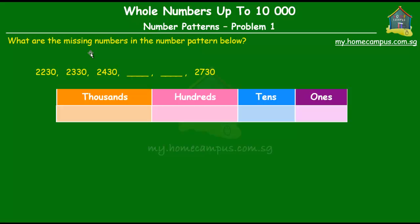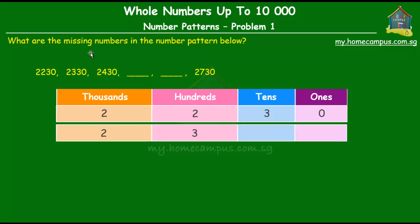The first number is 2230 and that goes there in the chart with 2000s, 200s, three tens and zero ones. Move on to the next number which is 2330. So two in the thousands, three in the hundreds, three in the tens and zero for the ones.